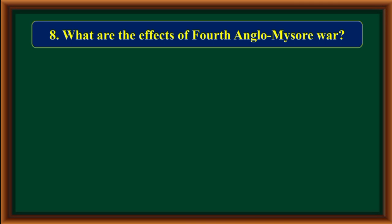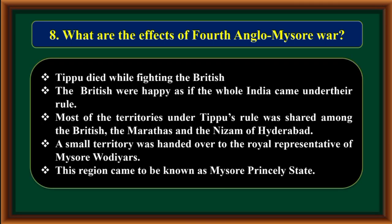What are the effects of the Fourth Anglo-Mysore war? Tipu died while fighting against the British. The British were pleased as if the whole of India had come under their rule. Most of the territories under Tipu's rule were shared among the British, the Marathas and the Nizam of Hyderabad. A small territory was handed over to the royal representative of the Mysore Wadiyars. This region came to be known as the Mysore princely state.